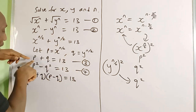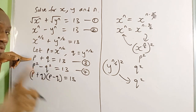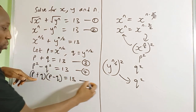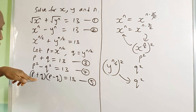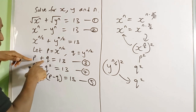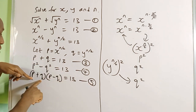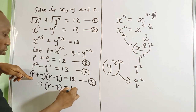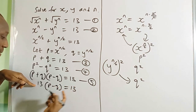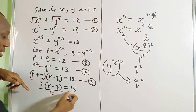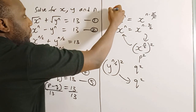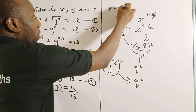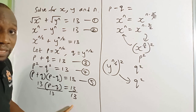We know that p plus q equals 13, so I can substitute 13 for p plus q in equation 5. That gives 13 times p minus q equals 13. Dividing both sides by 13, we get p minus q equals 1. Let's call this equation 6.